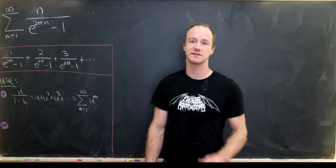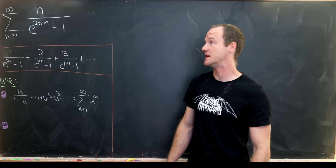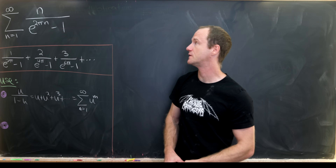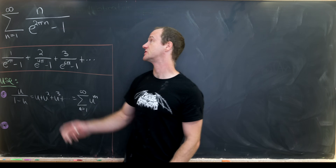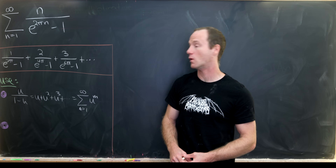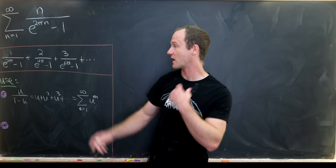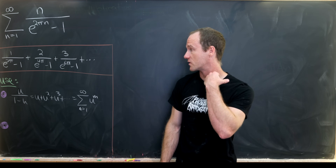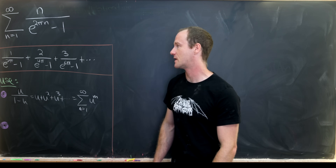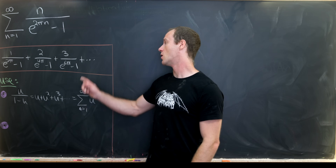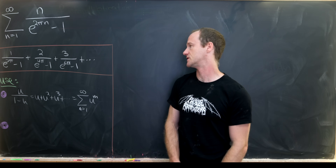I've got a nice Ramanujan-style summation to show everyone today. It is the sum as n goes from 1 to infinity of n over e to the 2πn minus 1. The first couple of terms look like this: 1 over e to the 2π minus 1, plus 2 over e to the 4π minus 1, plus 3 over e to the 6π minus 1, and so on and so forth.